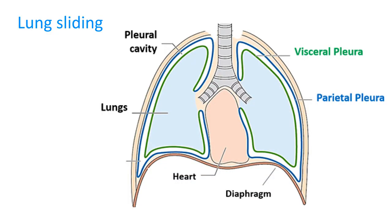Lung sliding refers to the sliding of the mobile visceral pleura against the static parietal pleura. Assuming you have healthy lungs, every time you breathe while your lungs inflate and expand and then deflate and contract, the visceral pleura, which wraps the lungs, will move and slide against the parietal pleura, which is stuck to the chest wall and therefore does not move much.